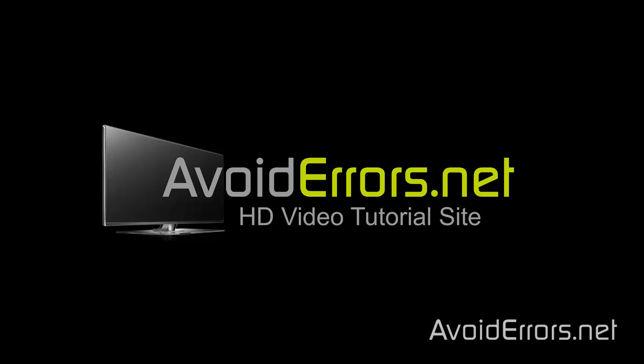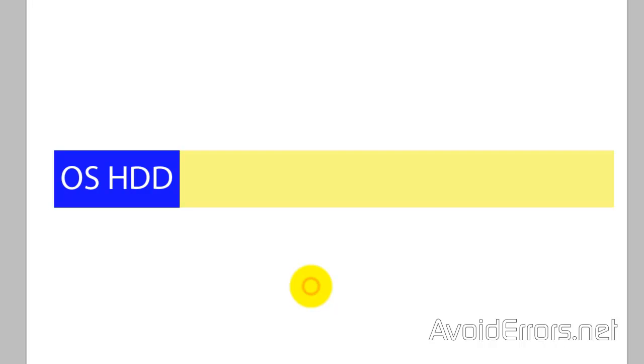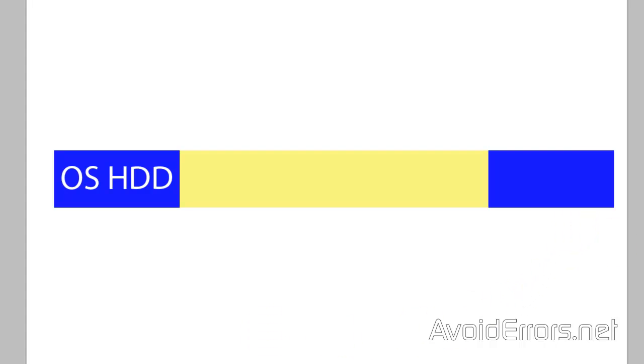Hi, my name is Miguel from Avoiderrors.net. In this tutorial I'm going to be showing you guys how to protect your hard drive using Shadow Defender. Pretending that this is your hard drive and your OS is installed on that drive — once you install Shadow Defender, it will redirect all the information to a different location on the drive, creating a virtual operating system on your hard drive.